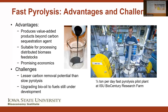Fast pyrolysis also has several advantages and challenges. Among the advantages, it produces value-added products beyond the carbon sequestration agent. The white smoke I showed earlier, when condensed into a black liquid, can be upgraded into renewable diesel fuel or bio-asphalt. It is suitable for processing distributed biomass feedstocks because the pyrolysis can be built at relatively small scale, and it has promising economics. The challenges include the fact that lesser carbon is removed than in slow pyrolysis, as more of the carbon goes into products such as the bio-oil, and upgrading of bio-oil to fuels is still under development. Here's a quarter ton per day fast pyrolysis pilot plant at Iowa State University, which is the basis of the analysis I will be presenting.